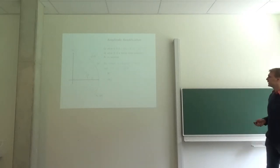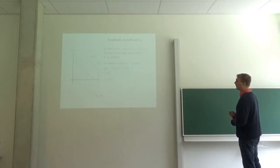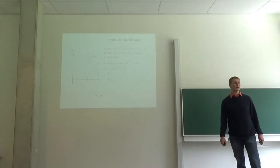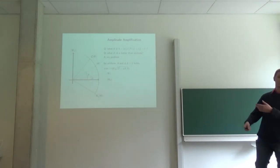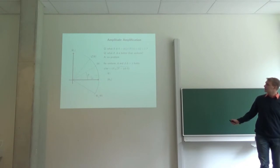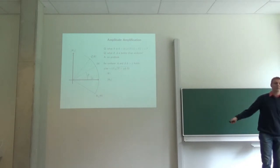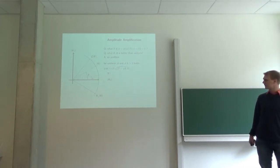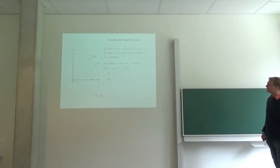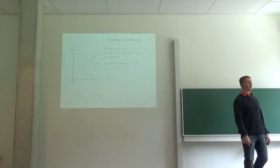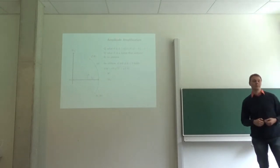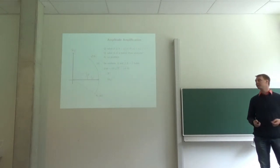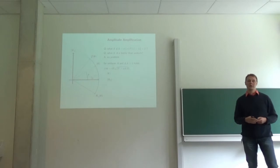That's amplitude amplification. The running time of your algorithm is always the square root of your search space. Whenever you have a larger number of solutions, the 2^k represents the potential number of solutions and a represents the actual solutions. You take the probability of randomly sampling a solution and take the square root — that's basically what Grover gives you. Or rather, 1 over the square root of that probability is the running time of Grover's algorithm or amplitude amplification.